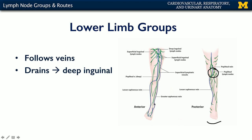We also have vasculature following the greater and the lesser saphenous veins. These eventually end up in the superficial group of lymph nodes around what you'd refer to as the groin. The superficial inguinal nodes drain into deep inguinal nodes in an area called the femoral triangle, and from there they may ascend up into the common iliac nodes of the pelvis.